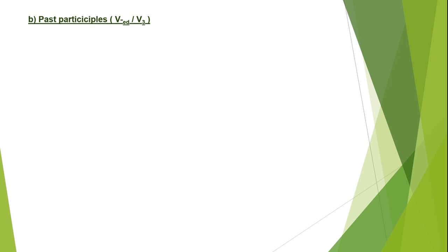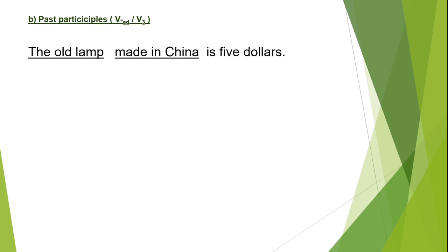Cô sẽ có ví dụ: 'The old lamp made in China is $5.' Cô gạch dưới 'the old lamp' và cụm từ 'made in China.' 'The old lamp' cũng là danh từ, và cụm từ 'made in China' là past participle phrase — nếu là động từ có quy tắc thì thêm -ed, còn động từ bất quy tắc thì dùng động từ ở cột số 3. Cụm từ này bổ nghĩa cho danh từ 'the old lamp.'